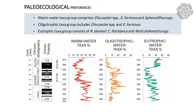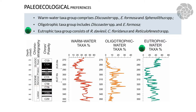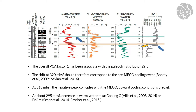Using the literature, we only used taxa for which there is a great consensus about their ecological behavior. We grouped warm water taxa, comprising Discoaster spp., Ericksonia formosa, and Sphenolithus spp. The oligotrophic taxa group included Discoaster and Ericksonia formosa. The eutrophic taxa group consists of Reticulofenestra daviesii, Cyclicargolithus floridanus, and Reticulofenestra spp. as a group. From the plotting of these three main groups, we observed different behaviors, and we also performed a multivariate analysis using PCA.